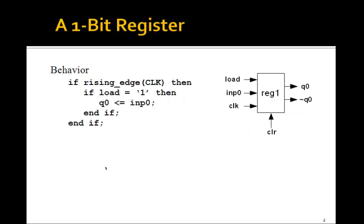Now, we can also represent this 1-bit register as a little block diagram with a load coming in, input 0 and clock as the inputs, Q0, NOT Q0 as the outputs, and we can have an asynchronous clear coming in.